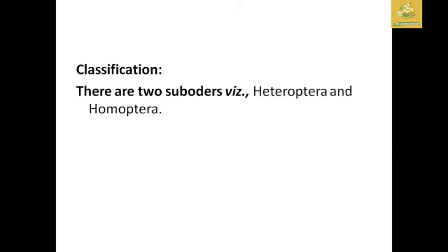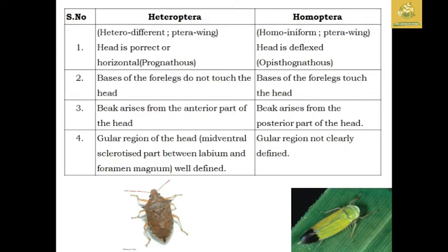Hemiptera has two suborders: Heteroptera and Homoptera. 'Hetero' means different and 'terra' means wings, and 'homo' means uniform and 'ptera' means wings. So Heteroptera has different-natured wings and Homoptera has uniform-natured wings.